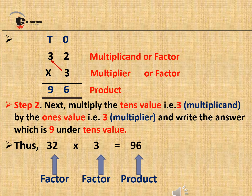Next, we multiply the tens value, that is 3 which is our multiplicand, by the ones value multiplier 3, and write the answer which is 9 under the tens place. Thus dear students, 32 multiplied by 3 is equal to 96. Here 32 and 3 are our multiplicand and multiplier, also known as factors, and the answer 96 is our product.